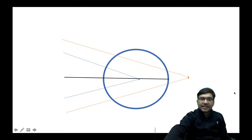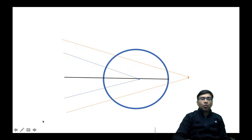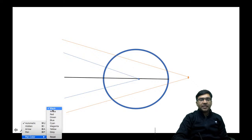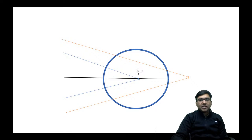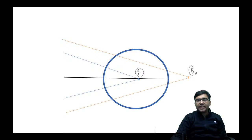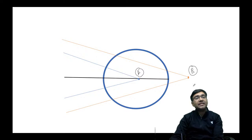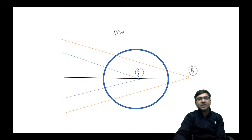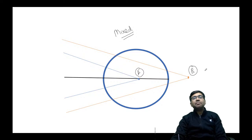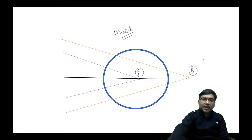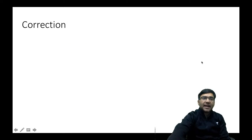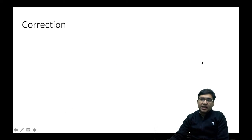We also have the type where one ray focuses in front of the retina and the other ray focuses behind the retina. This type of astigmatism is called mixed astigmatism. These are the major types of astigmatism and their classification.